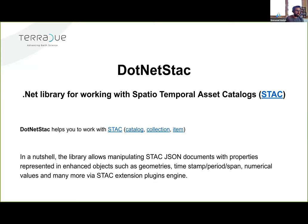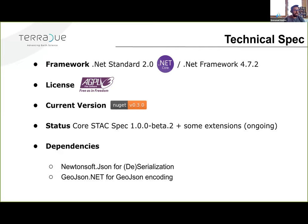DotNetSTAC is the .NET library to help you work with STAC catalog, collection, and items. It allows you to serialize and deserialize JSON documents, and manipulate them with enhanced rich objects in C# representing geometries, timestamps, numerical values, and more via the STAC extension plugin engine. Technically it's .NET Core ready with the .NET Standard framework. We've implemented the core STAC 1.0.0-beta-2 spec and some extensions, relying mainly on Newtonsoft.Json for serialization and GeoJSON.NET for GeoJSON.